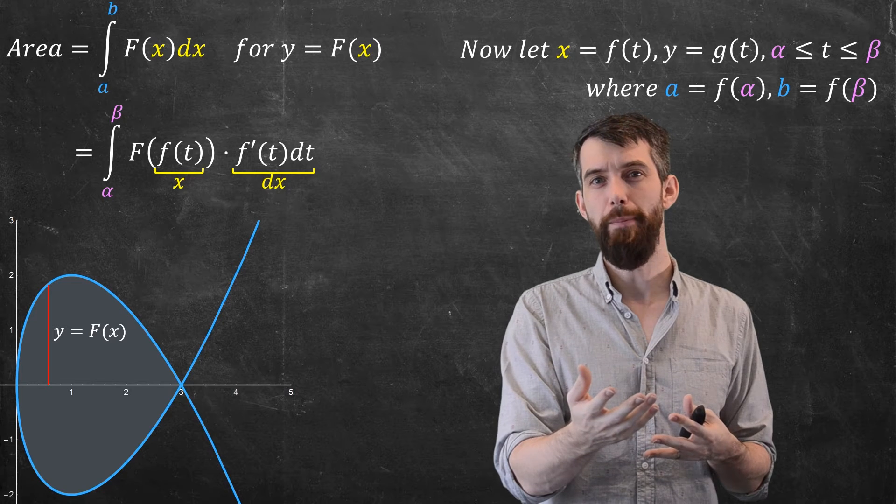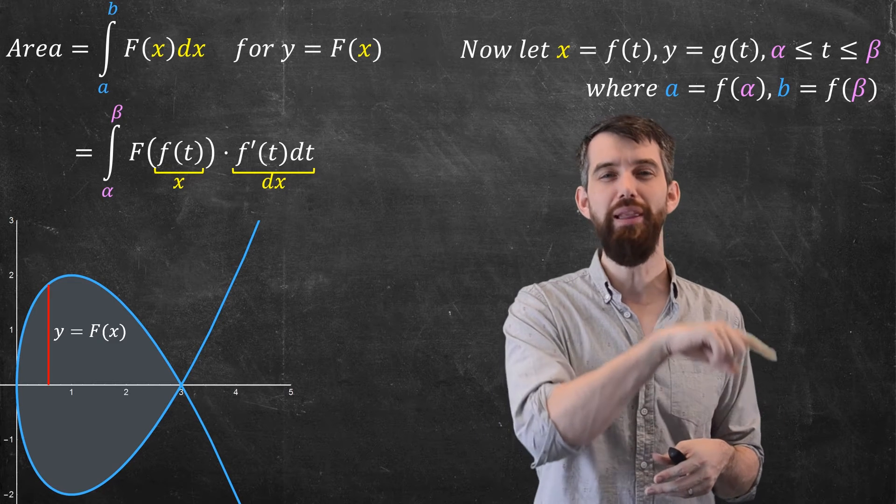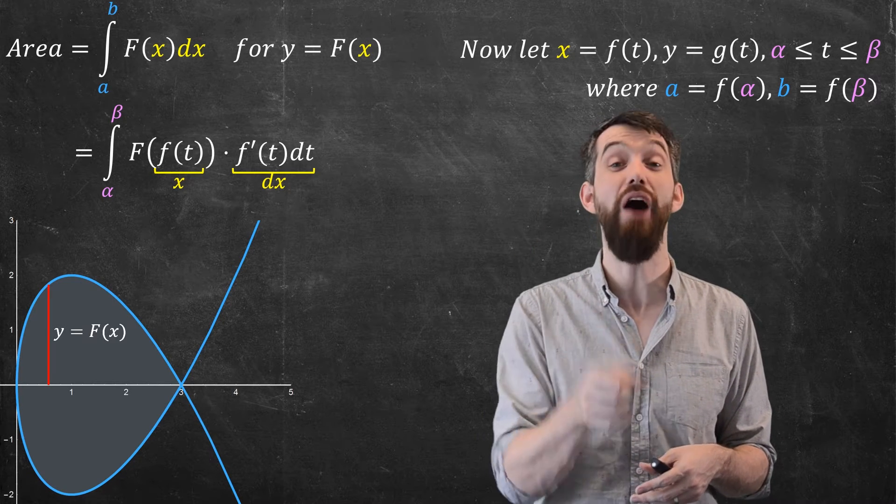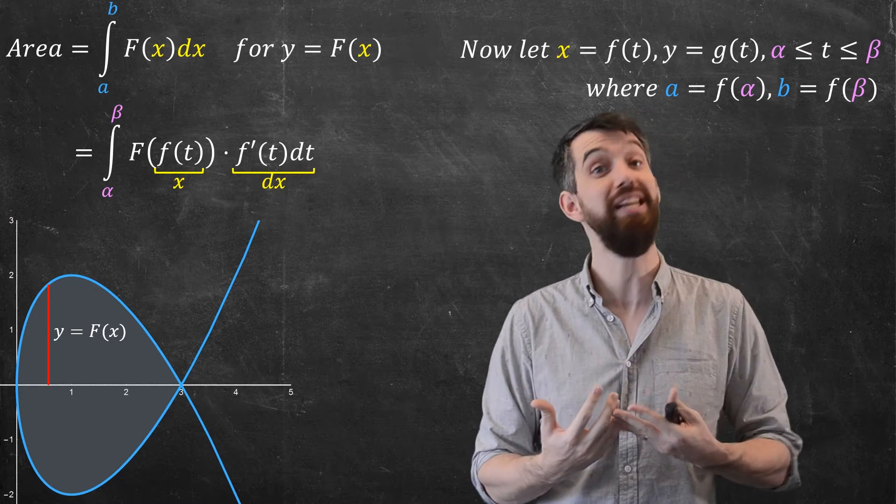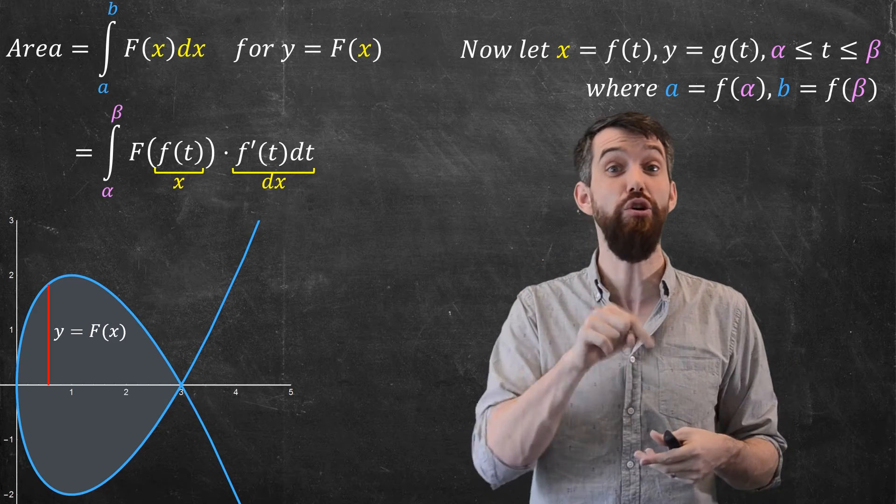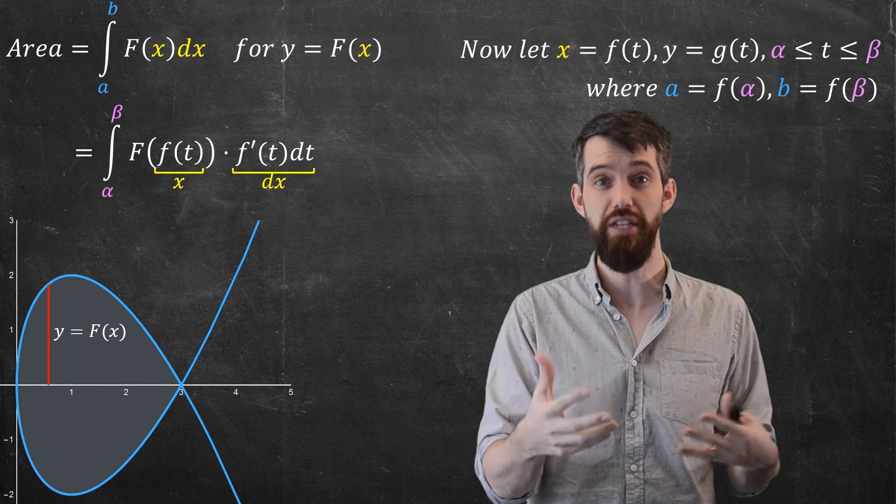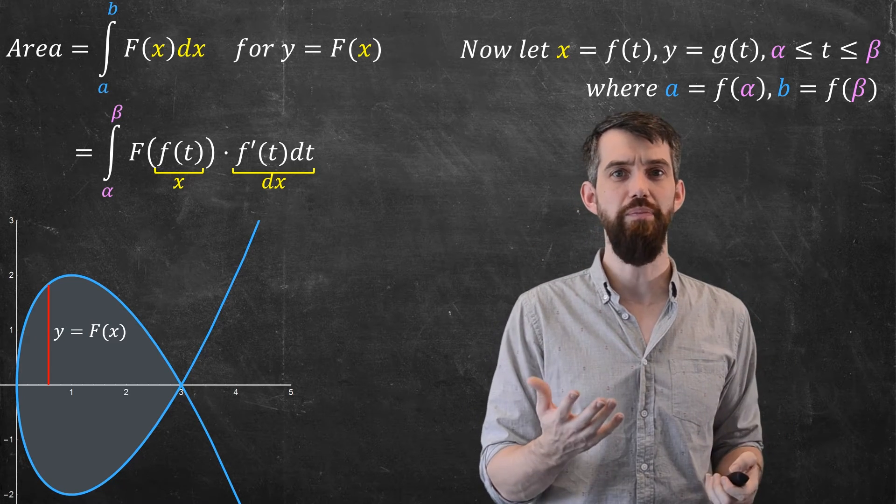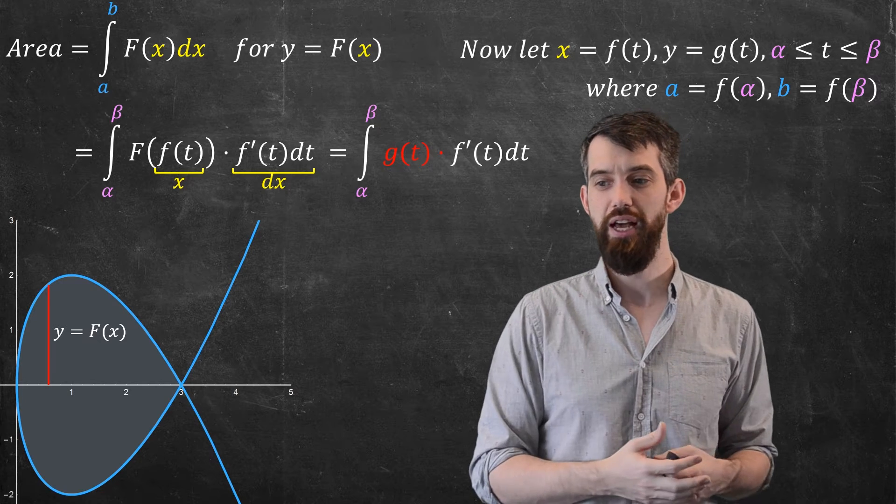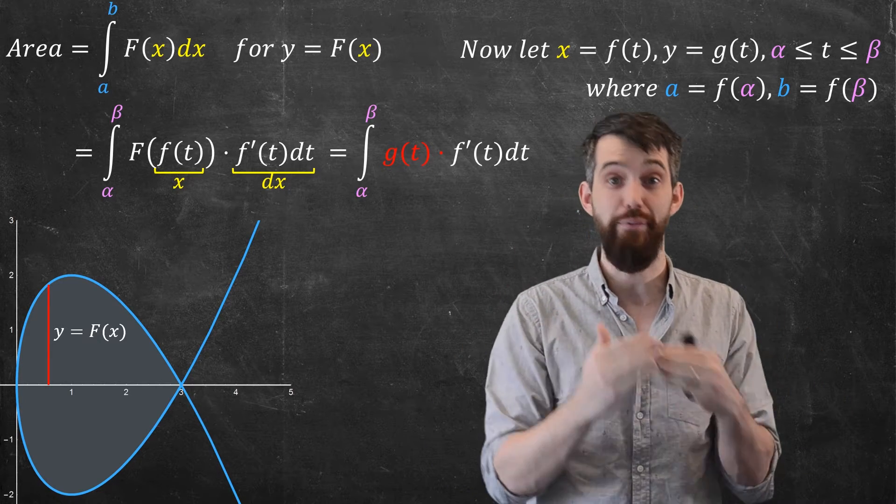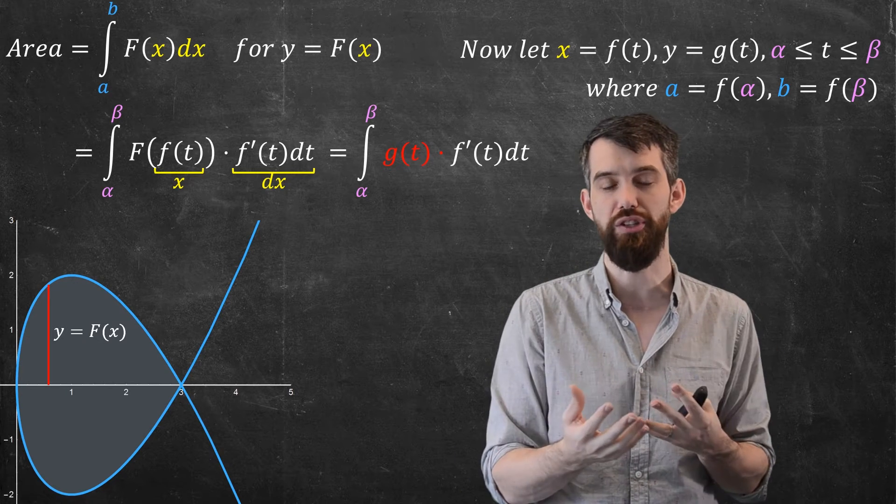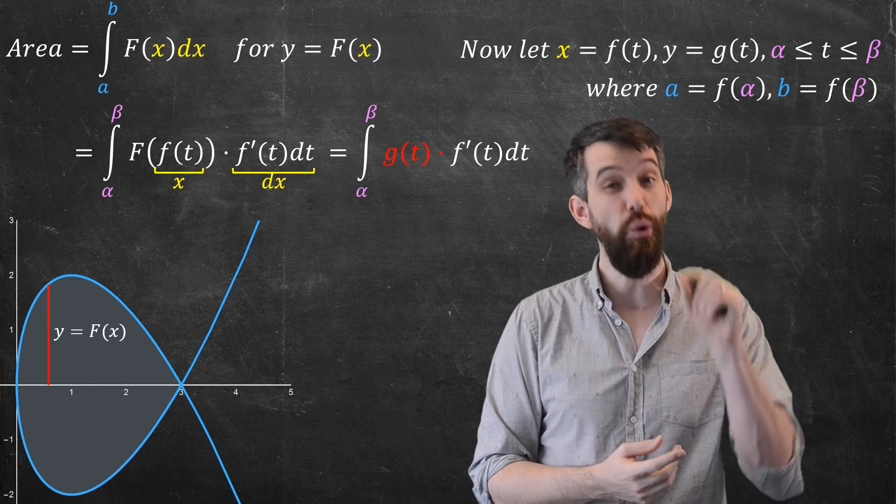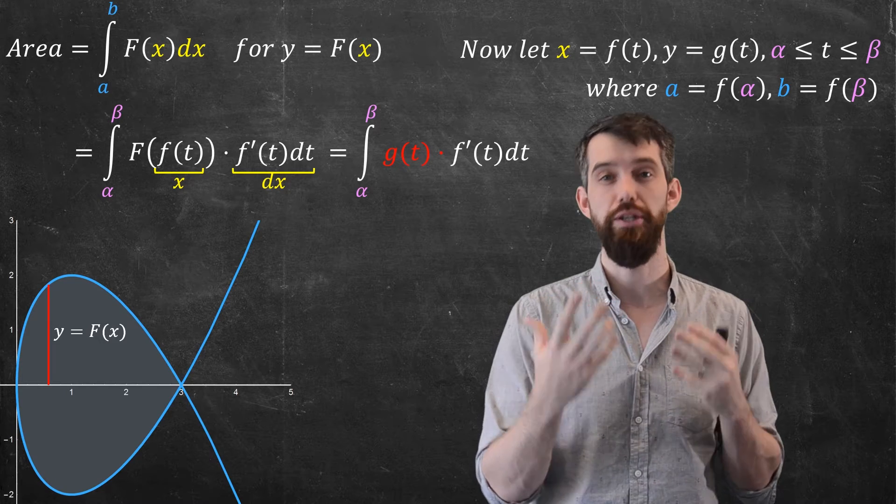Alright. Well, now let me look at this capital F of lowercase of f of t. Remember, capital F is representing the y, it's representing the height, and because it's a composition, the innermost thing is a function of t. But this is nothing but the function g of t. g of t also represents y, represents the height above the x-axis, and is also a function of t. These are the same things.